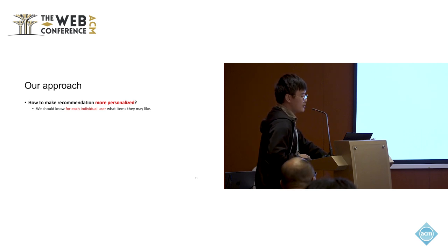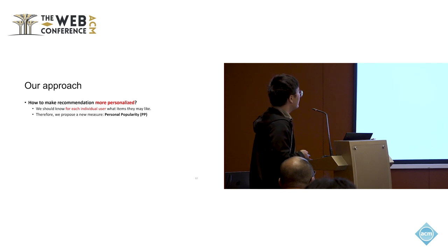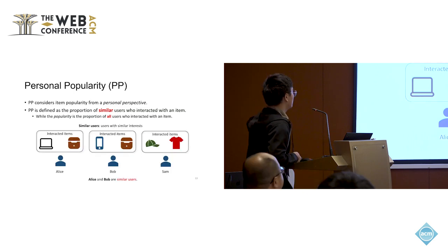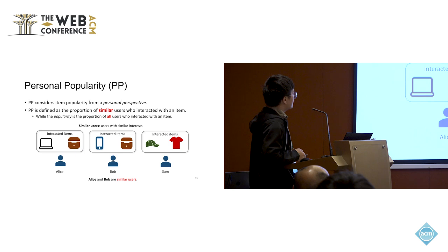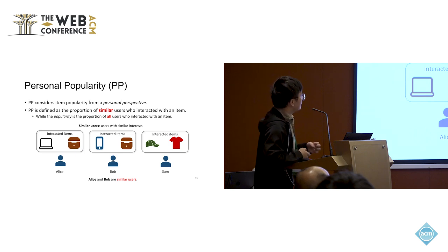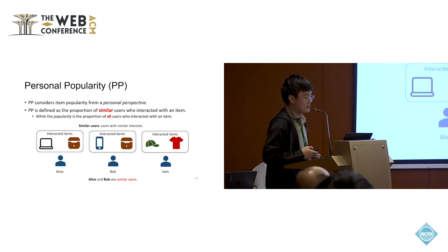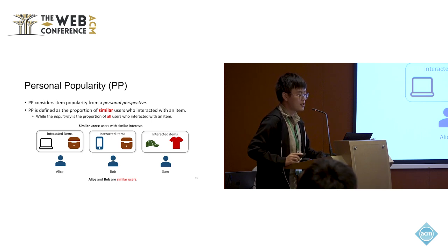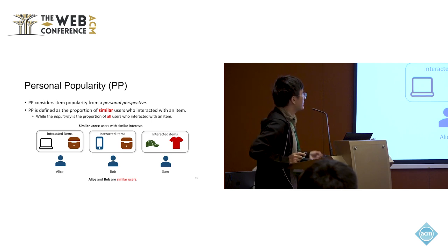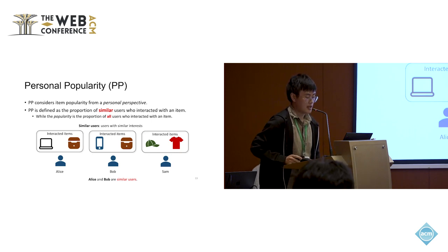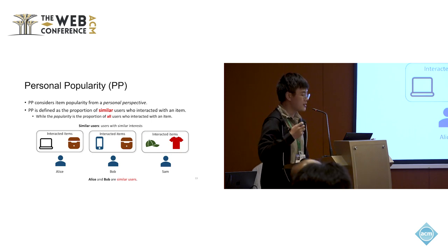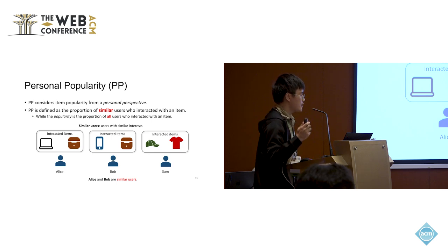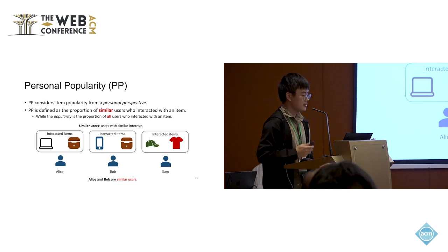We need to know, for each individual user, what items they may like. Therefore we propose a new measure called Personal Popularity, also called PP. PP considers item popularity from a personal perspective — it is defined as the proportion of similar users who have interacted with an item. This is a user-aware measure that considers the user's interests, unlike global popularity which uses all users.